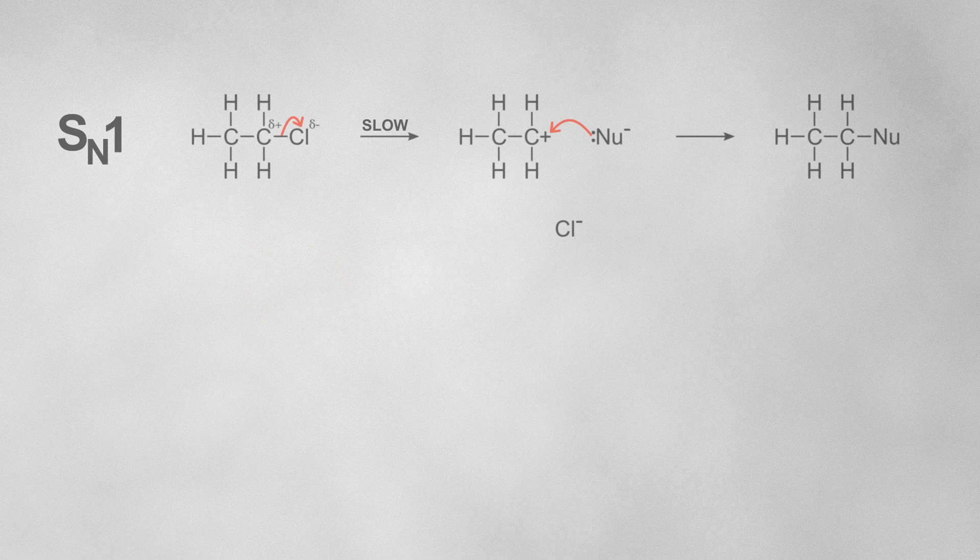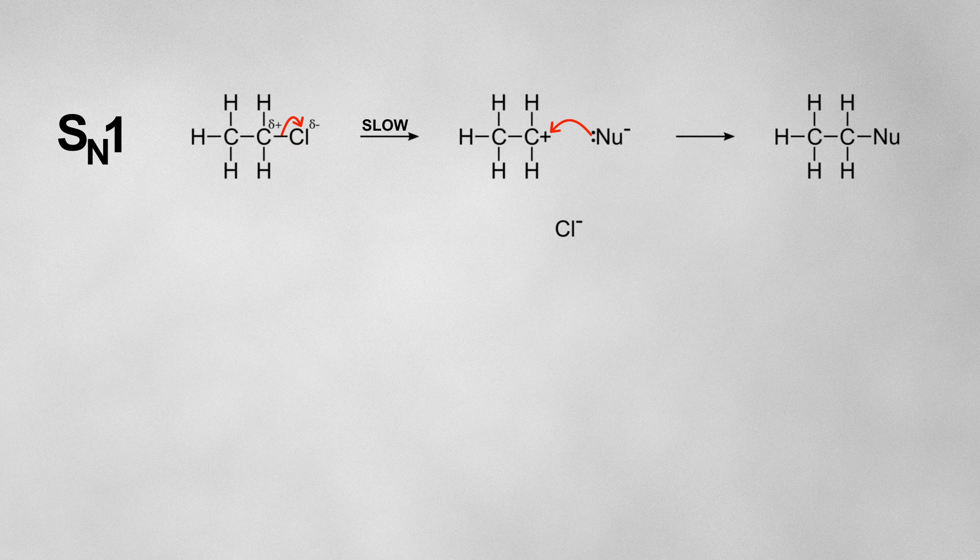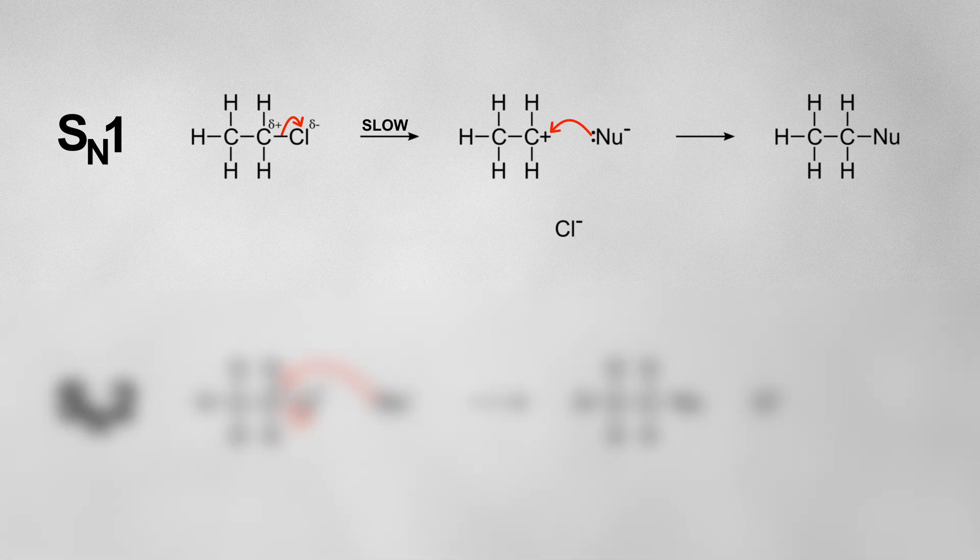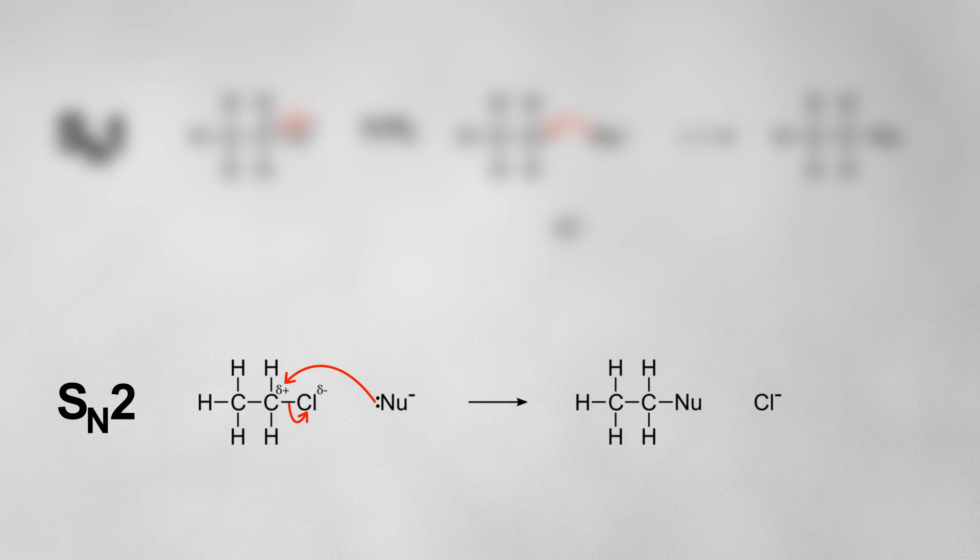So an SN1 reaction always occurs in two steps and an SN2 reaction always occurs in one step. So why would SN1 occur in some cases, while SN2 occurs in other cases?